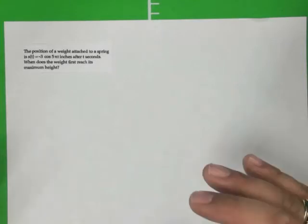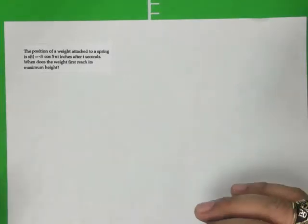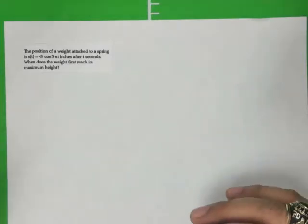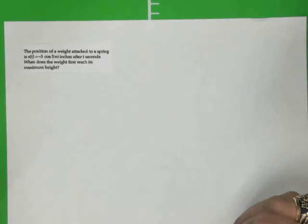Okay, in the following example, the position of a weight attached to a spring is modeled by the function s(t) equals negative 3 cosine of 5 pi t inches after t seconds. The question says, when does this weight first reach its maximum height?